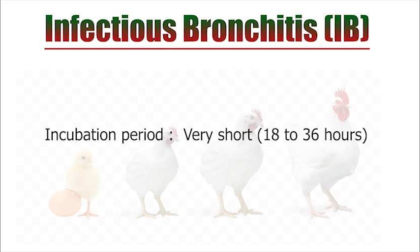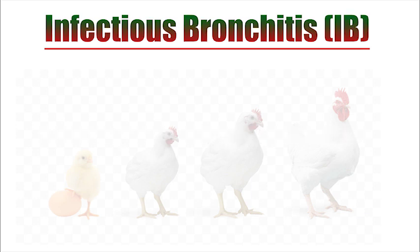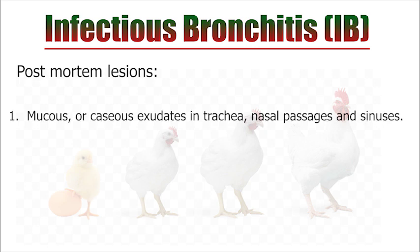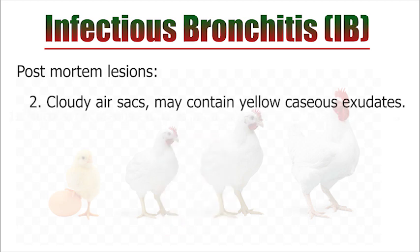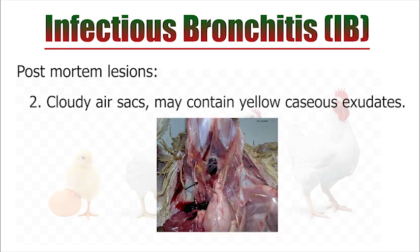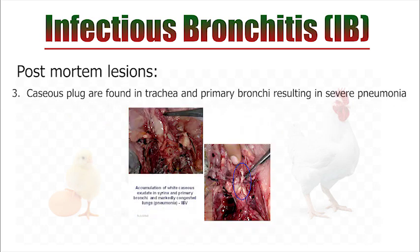Postmortem lesions in this disease include the presence of mucus or caseous exudates in the trachea, sinuses, and nasal passages. Cloudy air sacs with yellow caseous exudates are seen, and caseous plugs are also found in the trachea and particularly in the primary bronchi, causing severe obstruction of the air passages and resulting in severe pneumonia.